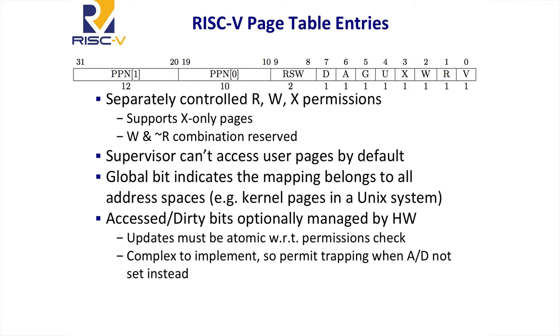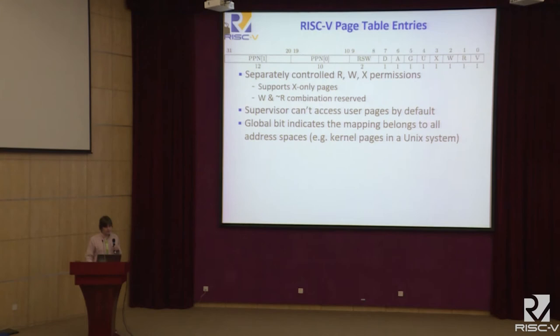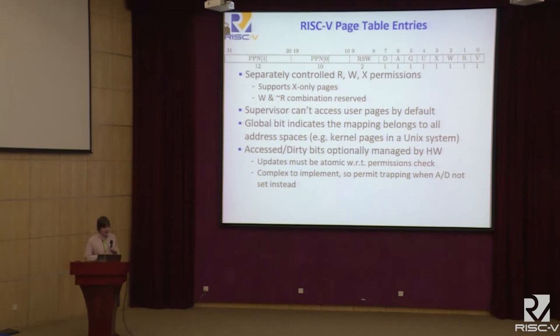One feature different from some other architectures: by default, permissions do not increase as you go up the privilege stack — supervisor is not allowed by default to access user pages. This is useful for catching bugs in device drivers and kernel code and provides a security advantage. There's also a global bit to accelerate the performance of operating system translations. One change in this version is how we manage access and dirty bits — the bits that indicate whether a page has been read or written since they were last cleared, used prominently for swapping.